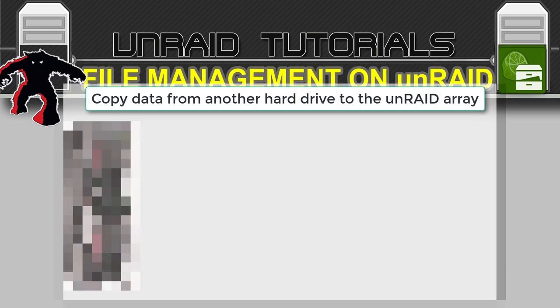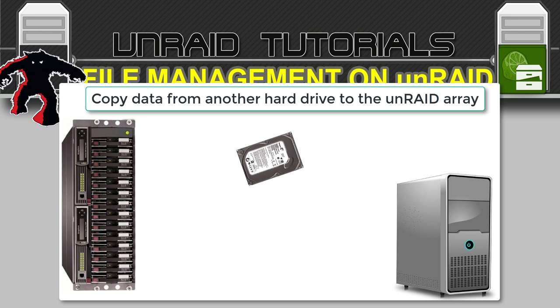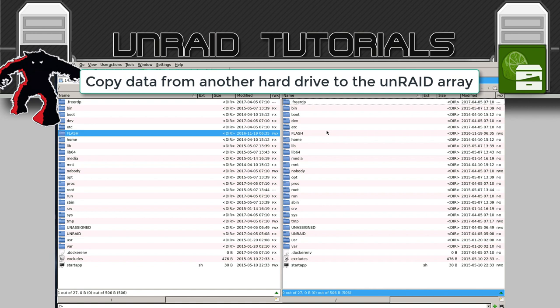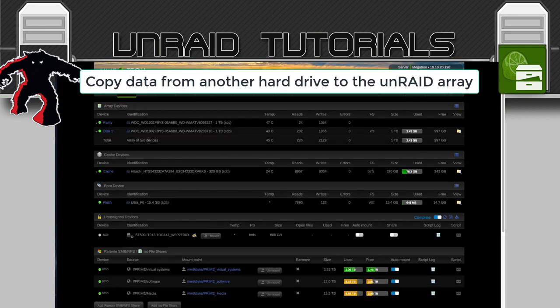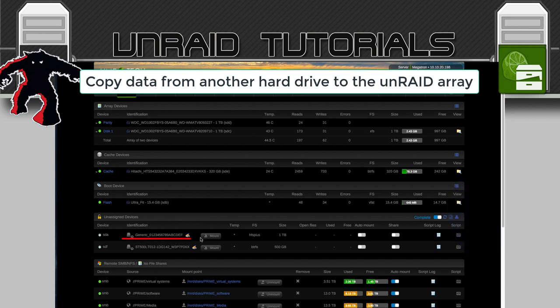Now let's move some data from a hard drive that isn't attached to our server onto our array. This is very useful if you're setting up your server for the first time and you've got hard drives from your old Windows computer that you want to put onto your server without transferring across the network. We can connect the drive using either SATA or USB. I'm going to plug a USB external hard drive into my server and have it attached as an unassigned drive.